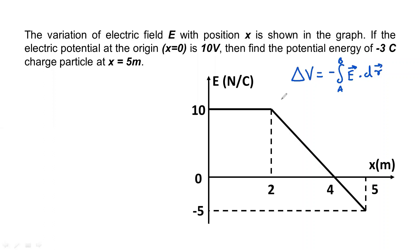We have done a question of potential at a point. Now this is something similar. We have given a graph of electric field. And in that case, how do you calculate the potential at a point?